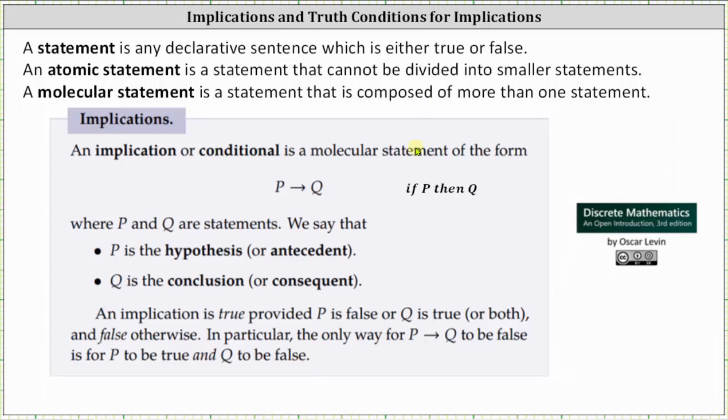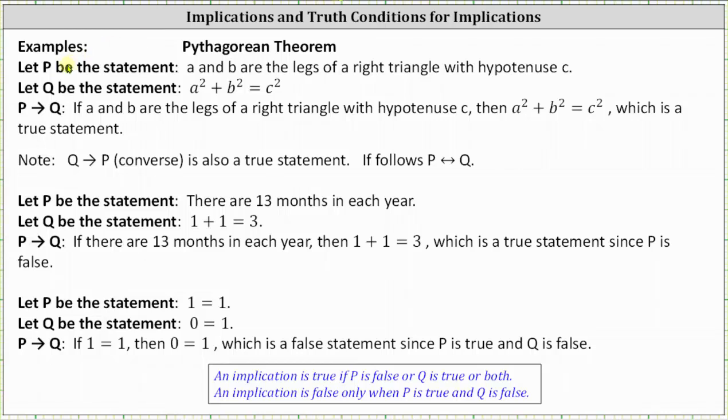Let's take a look at some examples. First, let P be the statement: A and B are the legs of a right triangle with hypotenuse C. Let Q be the statement: A² + B² = C². The implication P then Q is: if A and B are the legs of a right triangle with hypotenuse C, then A² + B² = C², which we should recognize to be a true statement.